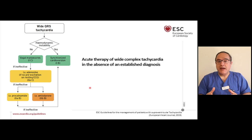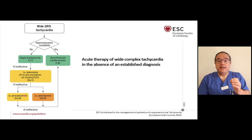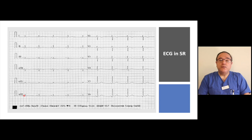This guideline needs some correction, because we should not manage every wide QRS complex tachycardia that is hemodynamically stable first with vagal maneuvers and then adenosine. We can still do so if we are sure that the wide QRS complex tachycardia is a supraventricular tachycardia — but not as a general approach to all wide QRS complex tachycardias.